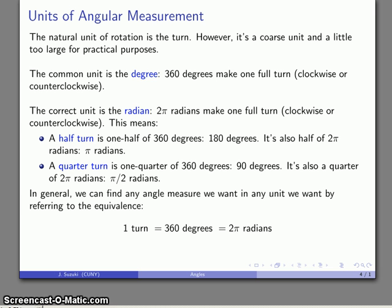And in general we can find any angular measure that you want as long as you remember this equivalence. One full turn is identical to, is equivalent to 360 degrees, is equivalent to 2π radians, and all of these things mean exactly the same thing.